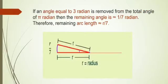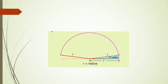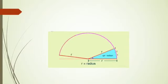If an angle equal to 3 radians is removed from the total angle of pi radians, then the remaining angle is approximately equal to 1 by 7 radians. Therefore, remaining arc length is approximately r by 7. If we bring 1 by 7 radians to right hand side, it looks like the figure. Gradually adding 1 by 7 on right hand side results to this.